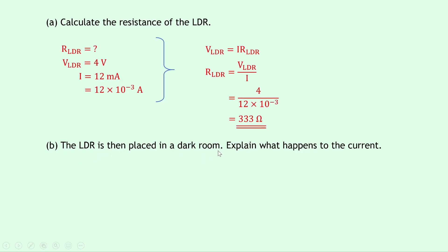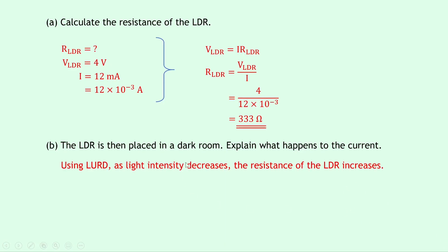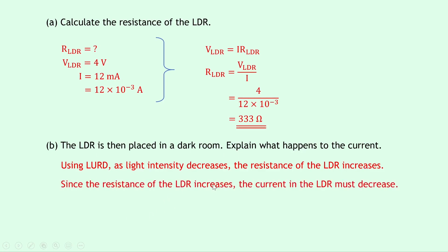Part B says the LDR is placed in a dark room — explain what happens to the current. We use the rule LURD for LDRs: as light intensity goes up, resistance goes down. But here light intensity goes down, so the opposite applies — light down, resistance up. As light intensity decreases, the resistance of the LDR increases. Since resistance opposes current flow, if resistance increases then the current must decrease. So the current in the LDR decreases.